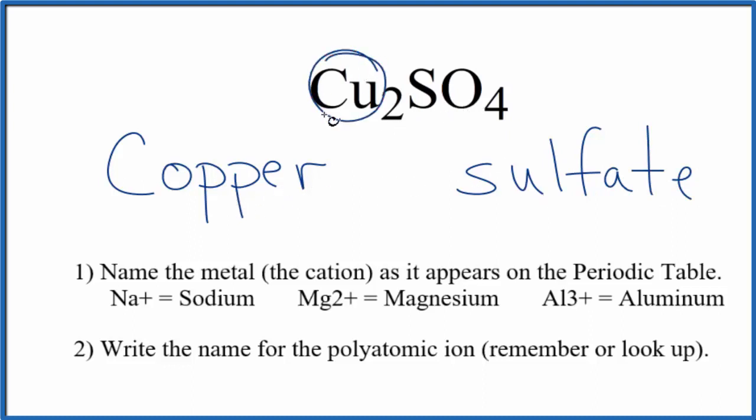But we said that copper is a transition metal and that means it can have a different ionic charge depending what it's bonded to. So here these two copper atoms, they're bonded to the sulfate ion. The whole thing, the whole sulfate ion is 2 minus.